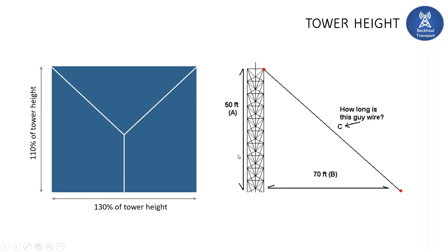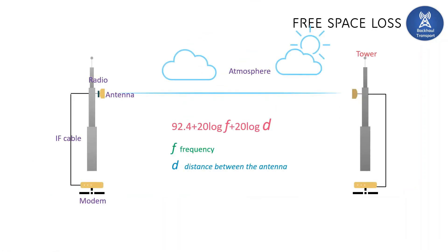Before deciding on a tower, you should conduct a soil test, assess wind loading, and check regulatory requirements — such as whether there is a nearby airport. Considering all these factors, you decide the tower height. A 100-meter tower allows longer hops, but in urban areas longer hops are usually not required, so shorter tower heights or even poles can be used.